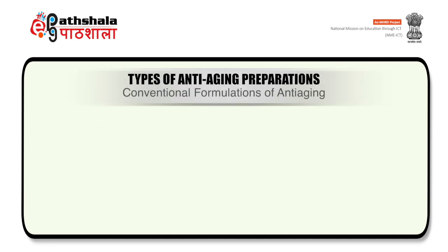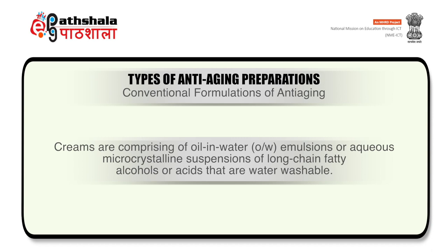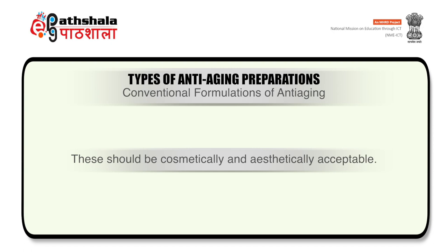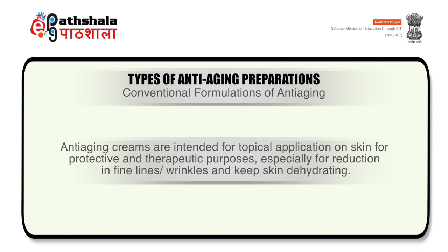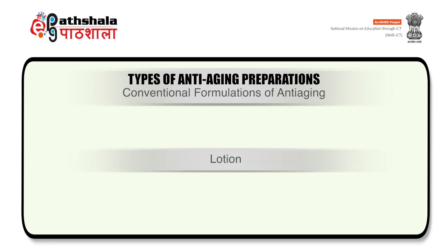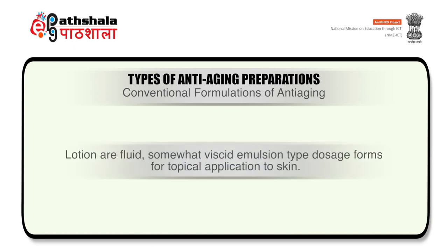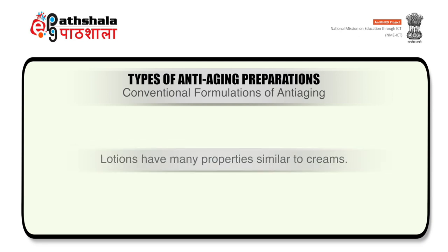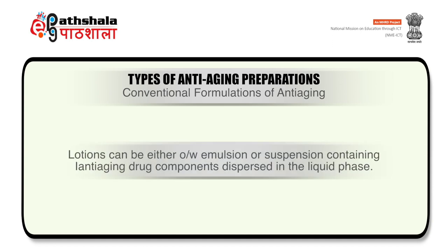We will discuss conventional type of anti-aging formulations. First is cream. Creams are comprising of oil and water emulsions or aqueous micro-crystalline suspensions of long chain fatty alcohols or acids that are water washable. They should be cosmetically and aesthetically acceptable. Anti-aging creams are intended for topical application on the skin for protective and therapeutic purposes, specially for reduction in fine lines or wrinkles and keeping skin hydrated. The second type is lotion. These are fluid, somewhat viscid emulsion-type dosage forms for topical application to the skin, with many properties similar to creams. Lotions can be either oil and water emulsions or suspensions containing anti-aging drug components dispersed in the liquid phase.